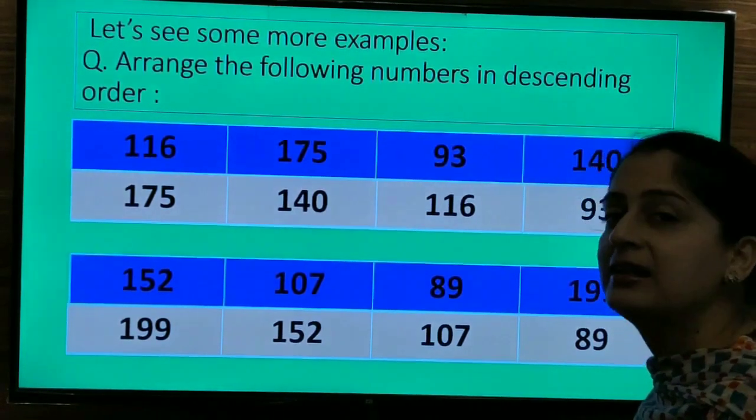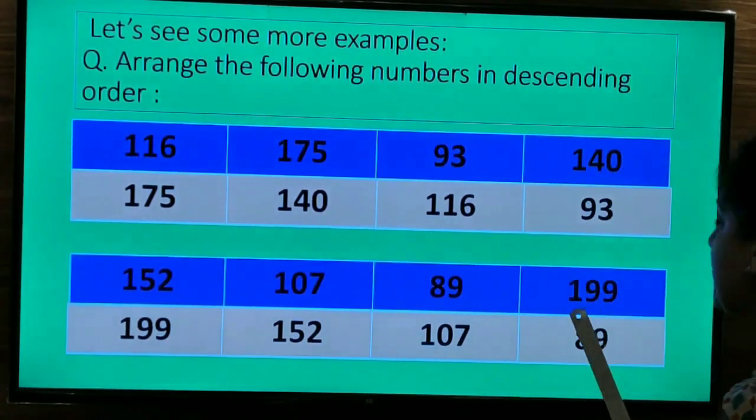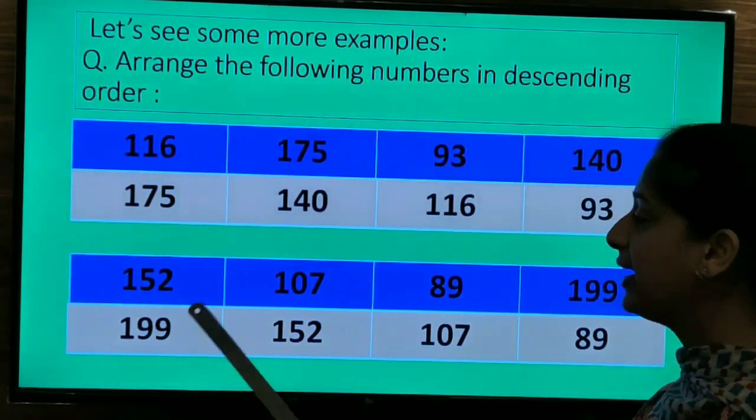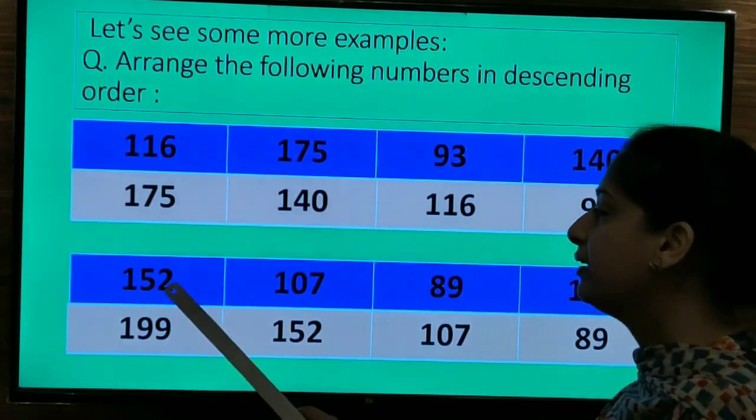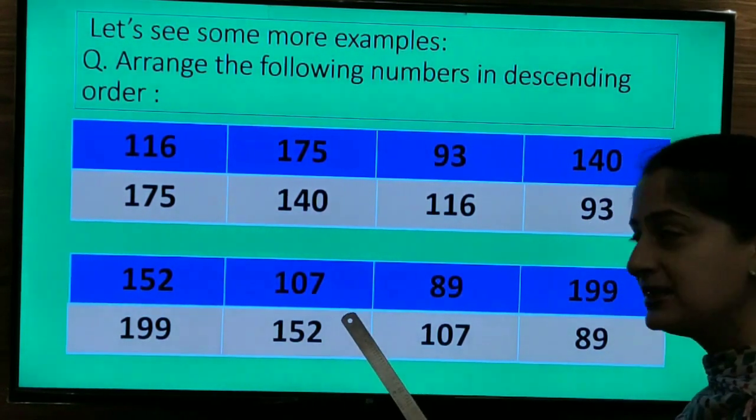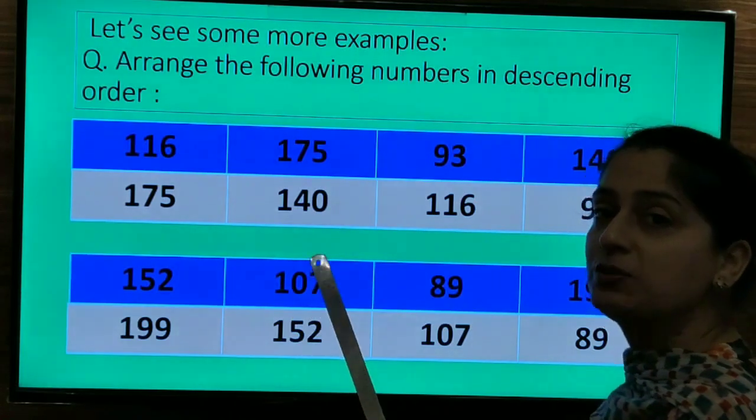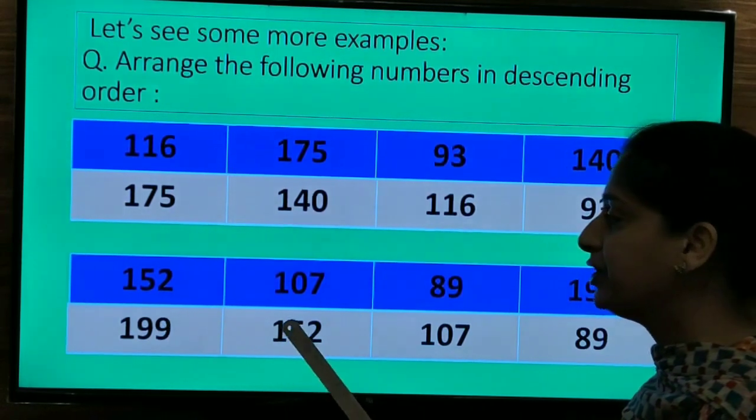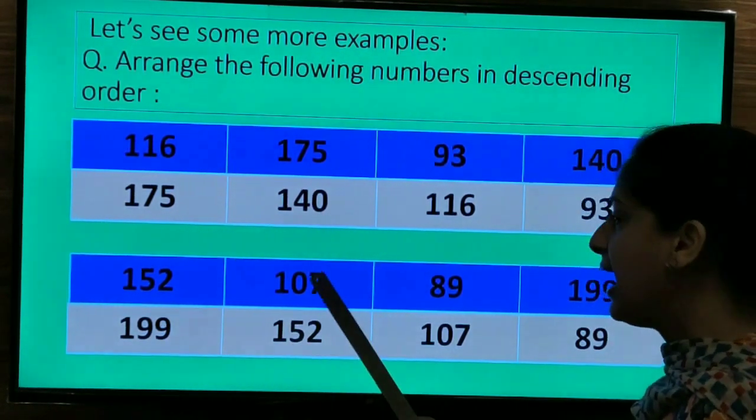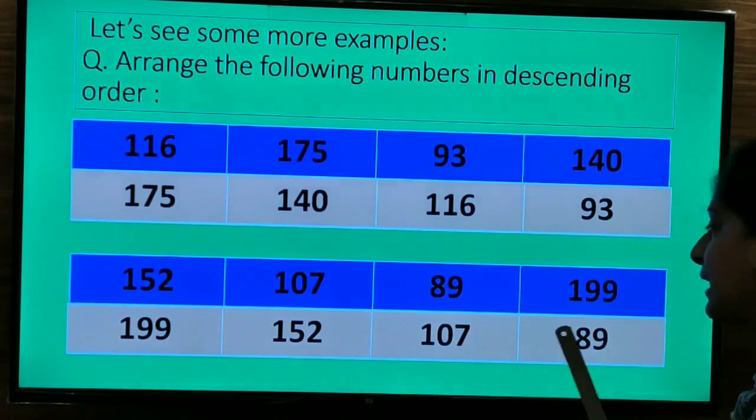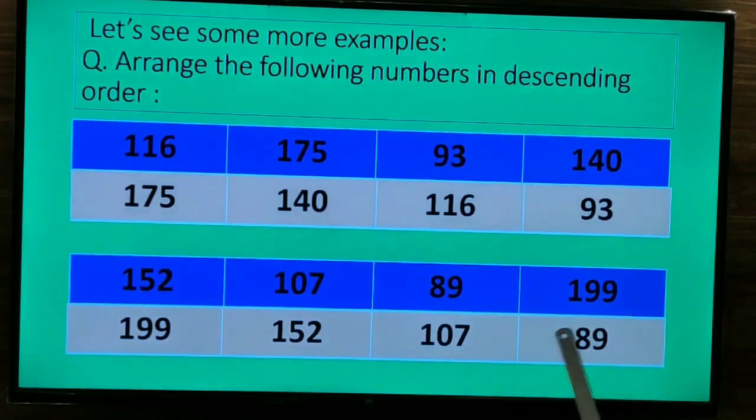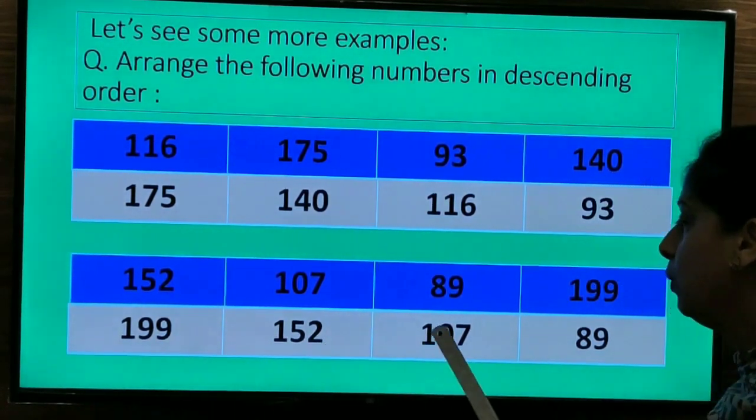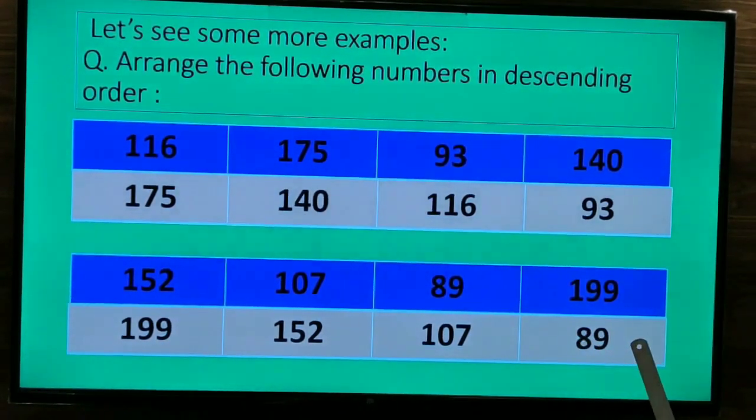So we will place 199 here in the first column. Next, which numbers are left? 152 and 107. 5 and 0. Which one is bigger? 152. So we will place 152 next to 199 and 107 in the third place and 89 is the smallest of all. So our descending order will be 199, 152, 107 and 89.